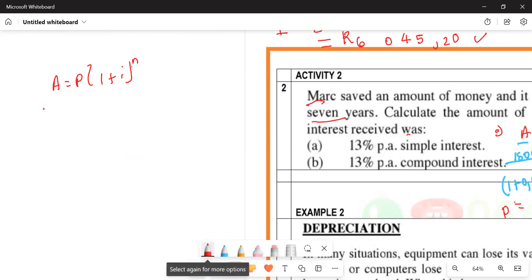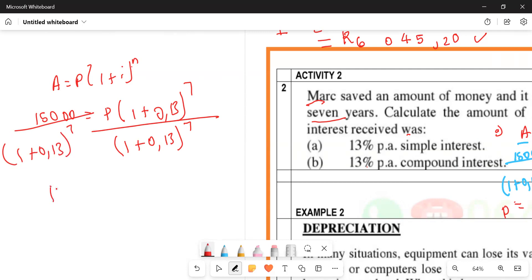We know A is 15,000. We're looking for P. So 15,000 equals P times one plus 0.13 to the power of seven. We divide both sides by one plus 0.13 to the power of seven.